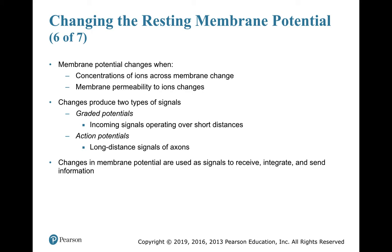Membrane potential can change if the concentration of ions across the membrane changes, or if membrane permeability changes. We change membrane permeability by activating channels for sodium and potassium. Those changes in resting membrane potential can produce two types of signals: a graded potential, which covers only a short distance around where it starts, or a self-propagating long-distance signal called an action potential. If we generate enough graded potential, we can trigger an action potential — and an action potential is what we refer to as a neuron firing.